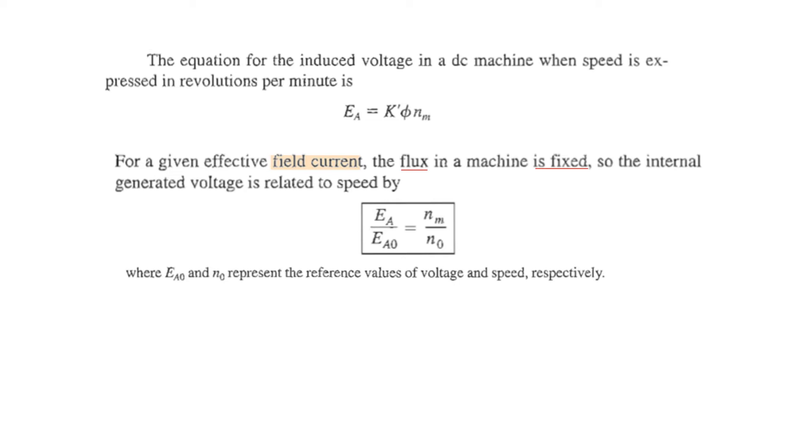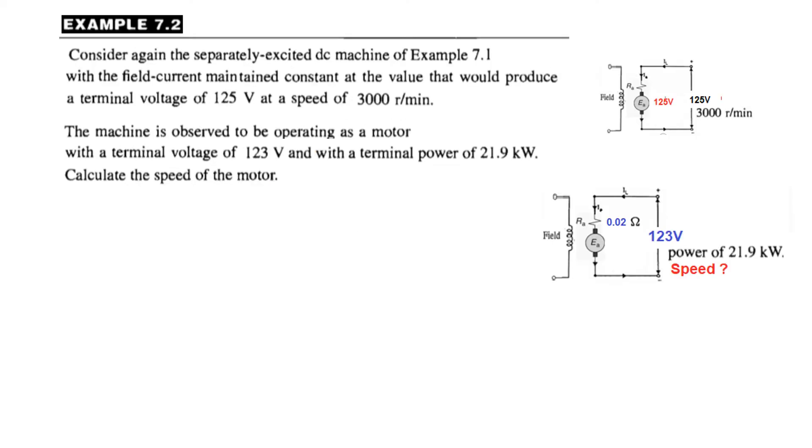Now let's discuss example 7.2 solved in the book. We have to consider again the separately excited DC machine of example 7.1 with the field current maintained constant at the value that would produce a terminal voltage of 125 volt at a speed of 3000 revolutions per minute.